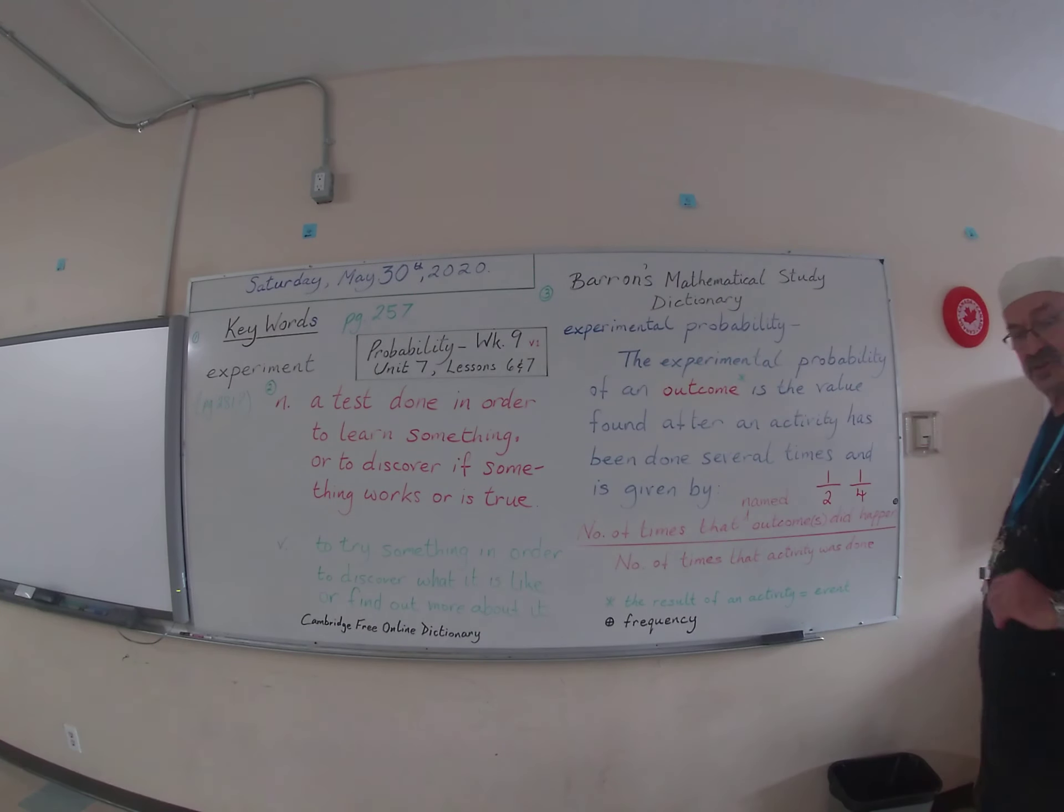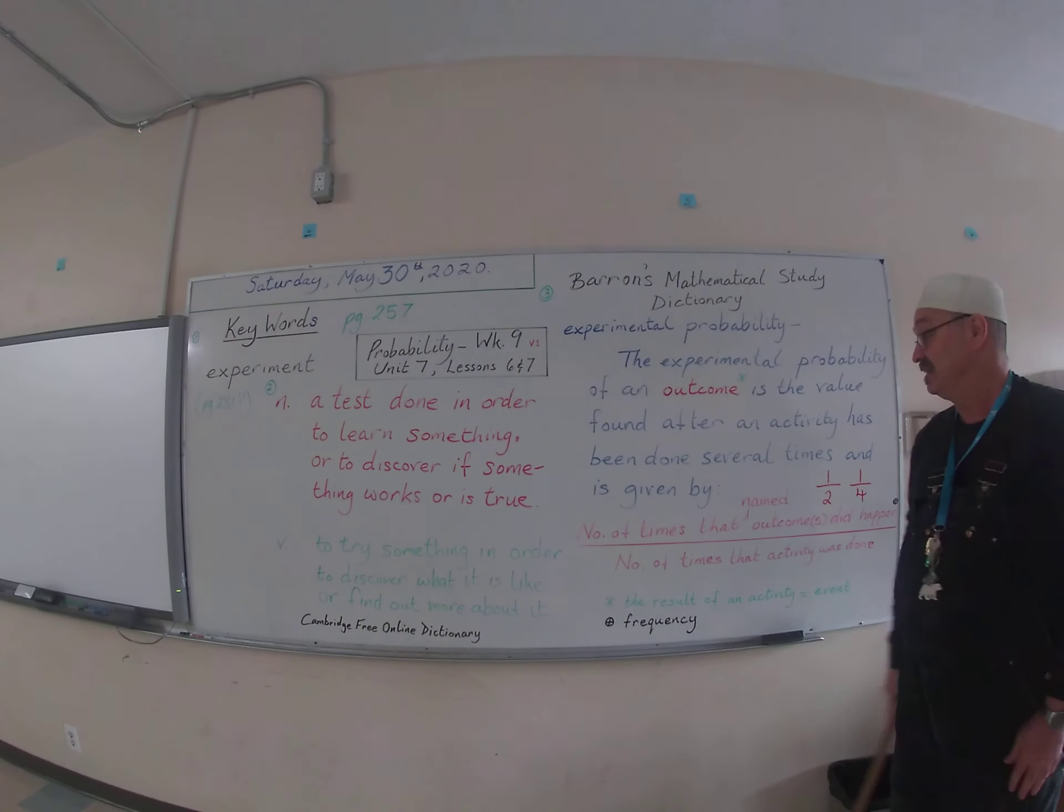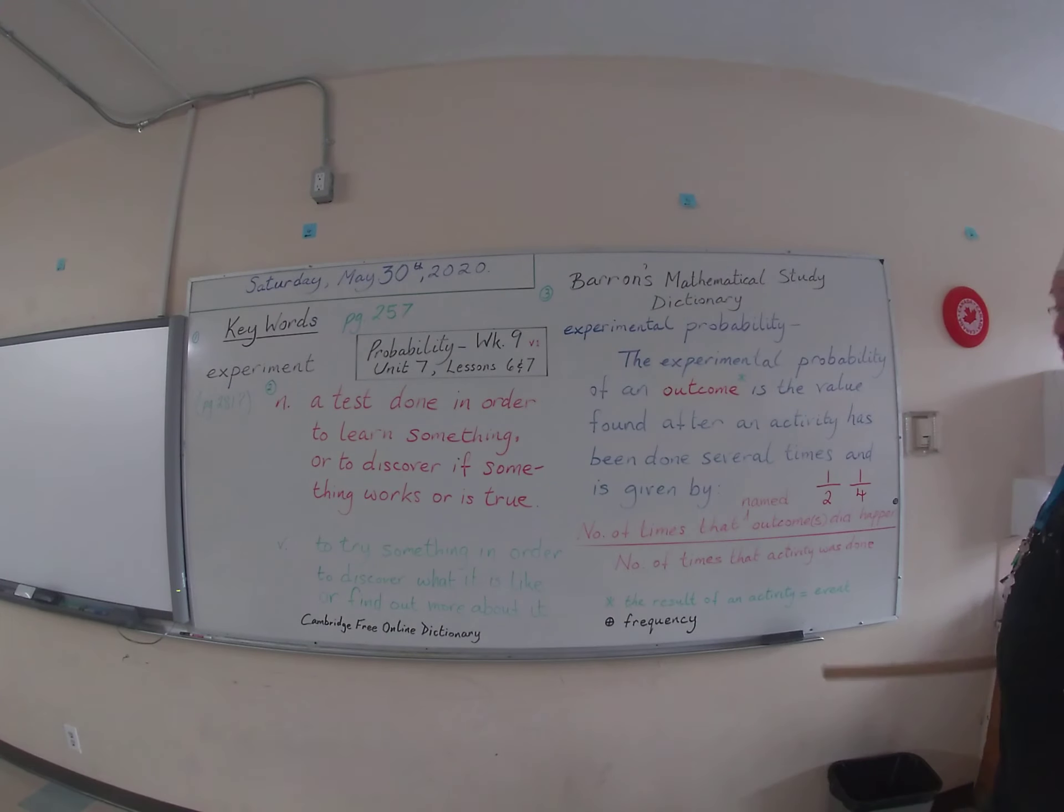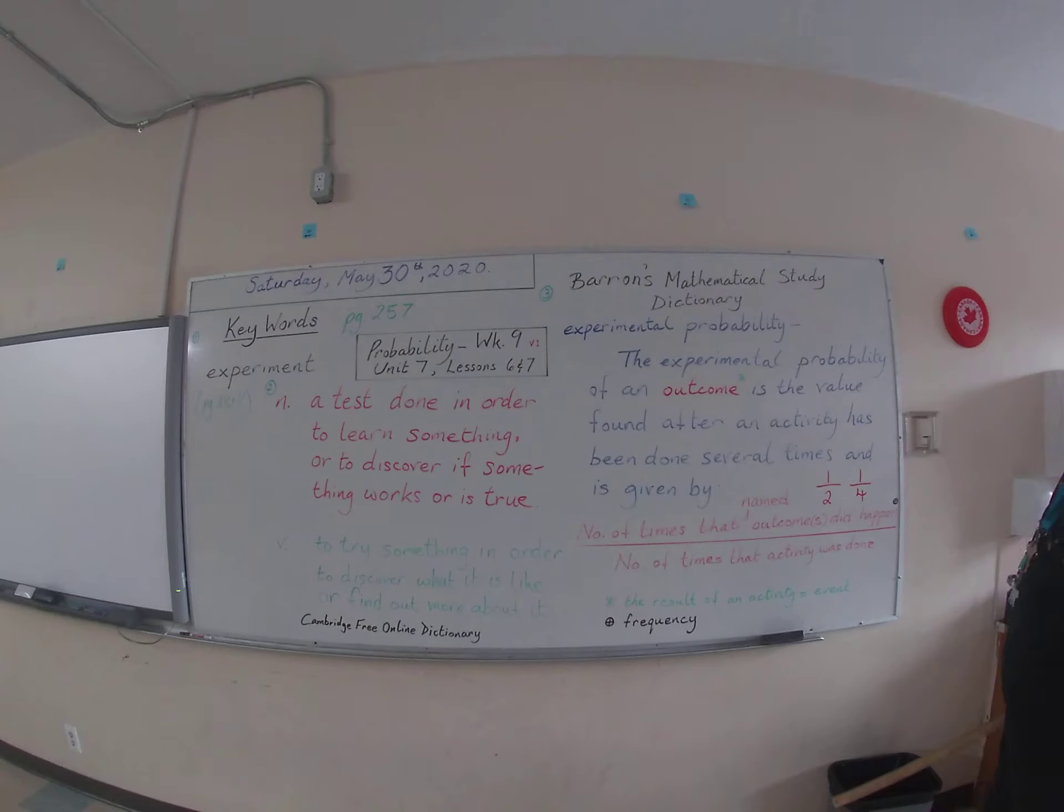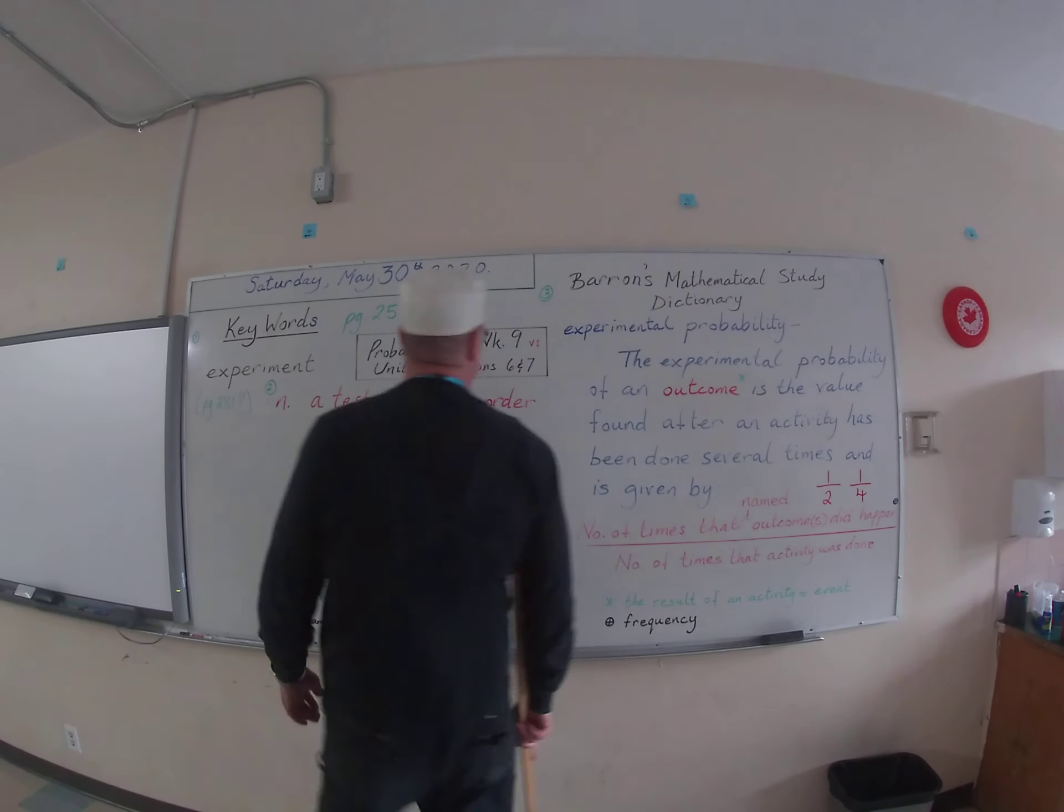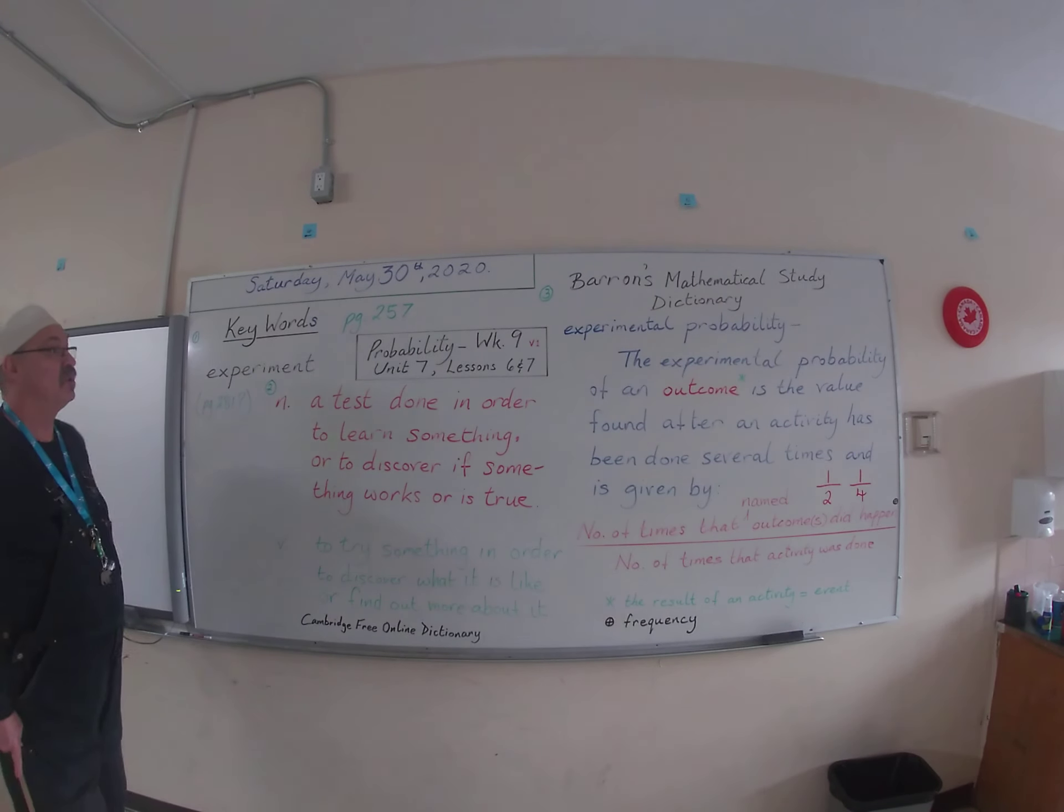The only other term that I want to make you aware of is the number of times that an outcome did happen is sometimes referred to as the frequency. And that's just what it means. The number of times that something happens is its frequency. Okay, so there is a pretty good definition at the beginning of what an experiment is and what experimental probability is.